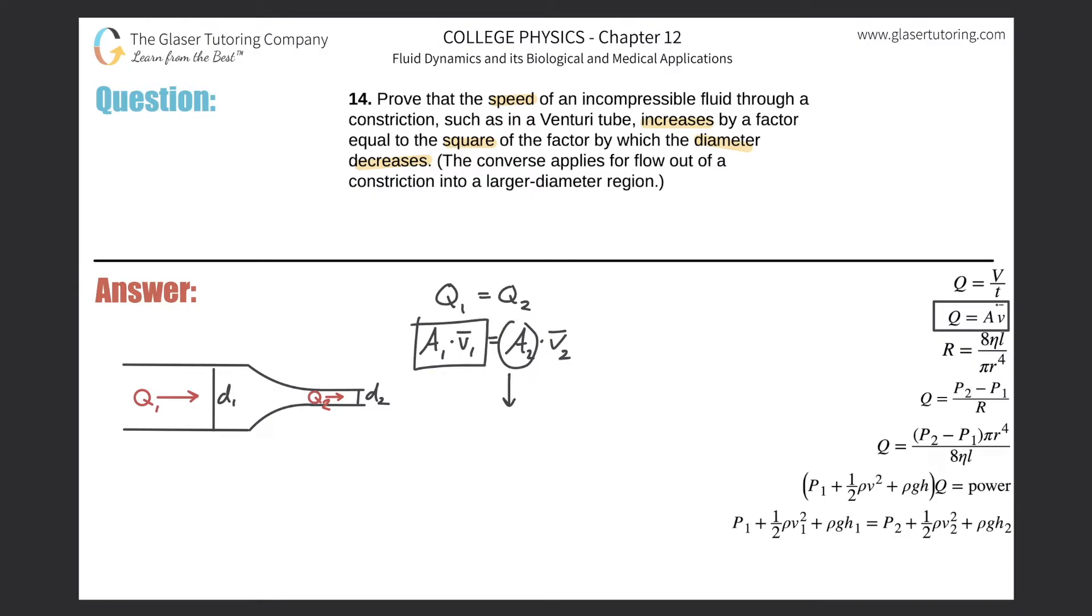This initial state is some constant number. And the area goes down for the second portion. What has to happen to the velocity? It has to increase, in order for the value here to stay the same.